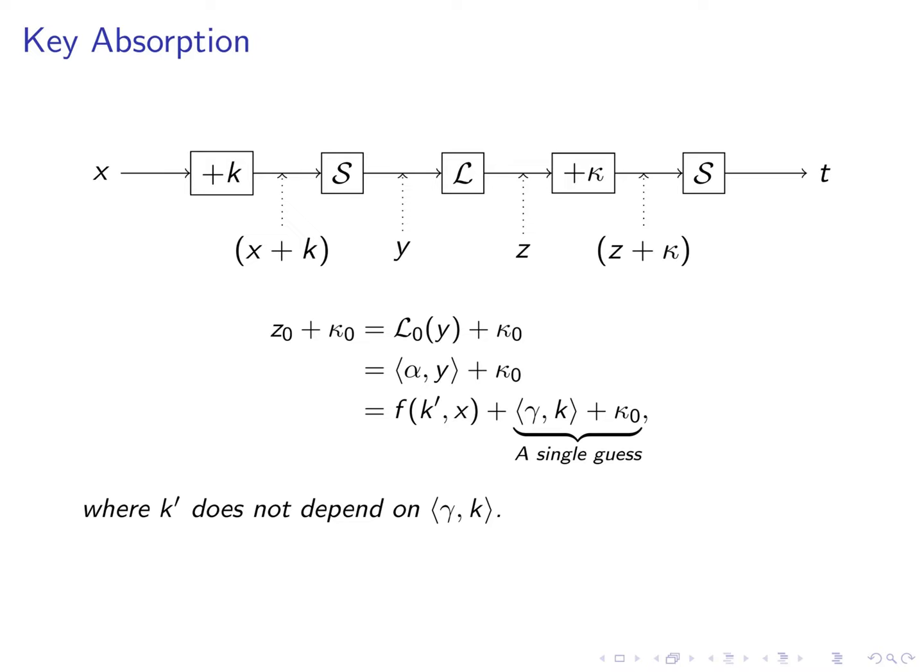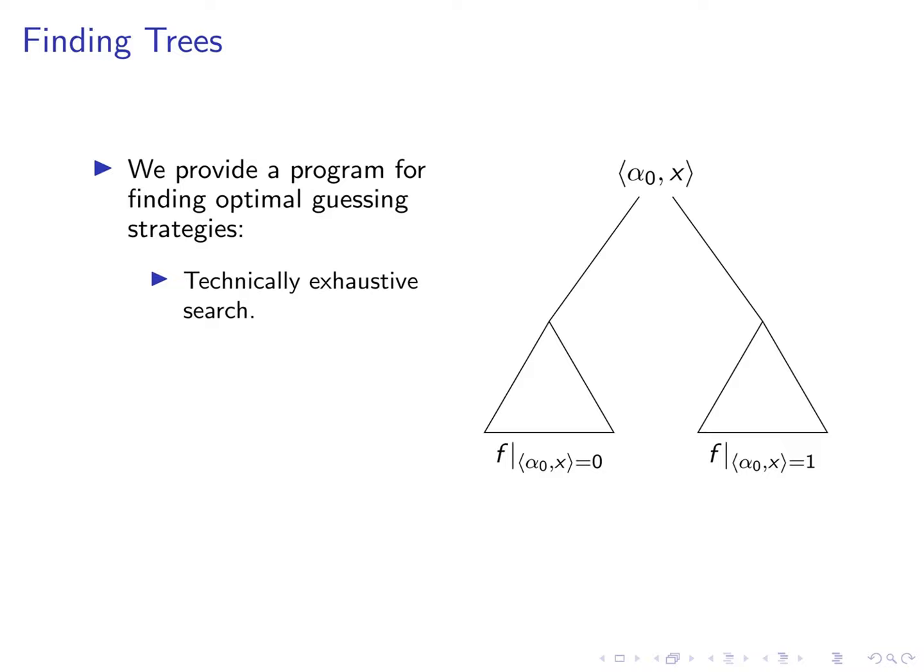For finding optimal guessing strategies we opted for the simplest method. Given a function we naively enumerate all linear combinations of the input x, alpha 0 times x in the picture and then restrict the target function twice. Once to the inputs where alpha 0 times x is 0 and once to the inputs where it is 1. We then recursively apply the algorithm to find optimal trees for the sub functions. Finally we choose the best of the resulting trees.